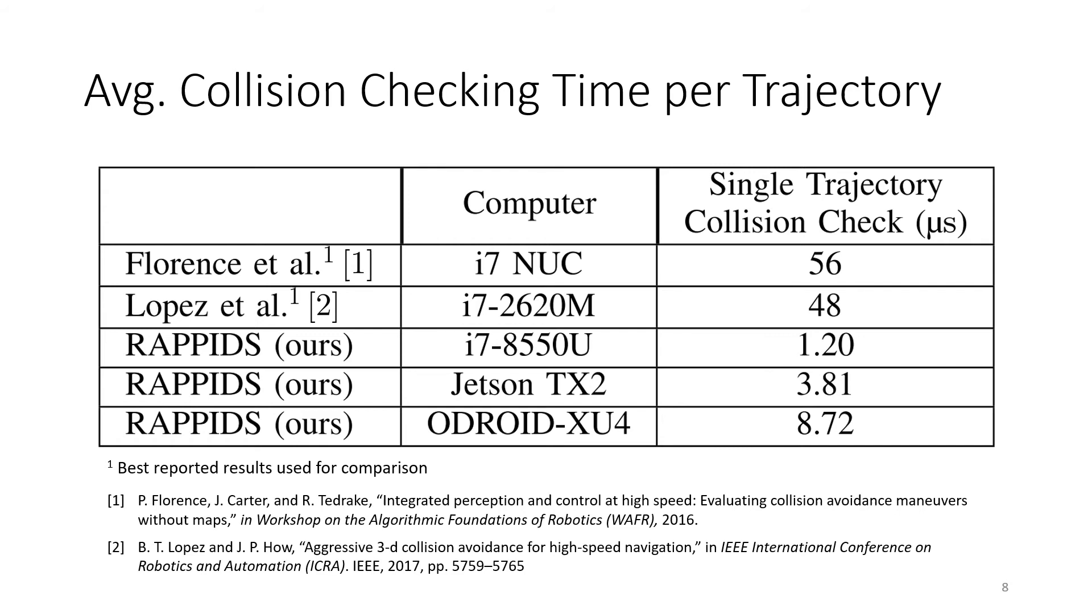The bottom three rows show the performance of our algorithm across three different platforms, the first being a laptop i7 processor, the second one being a Jetson TX2, and then the third an Odroid XU4, which is very similar to a Raspberry Pi if you've not heard of it.